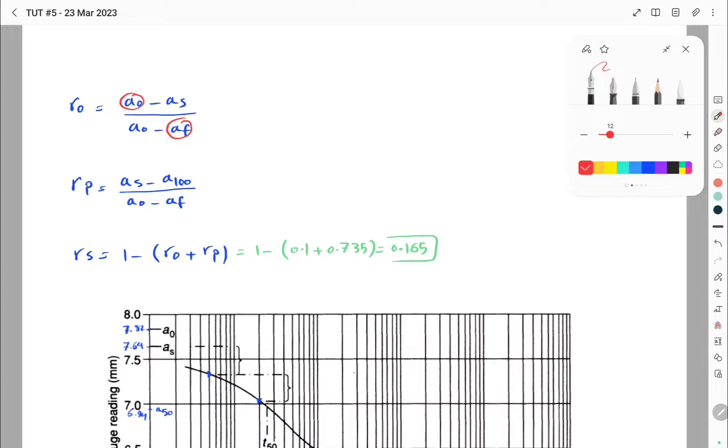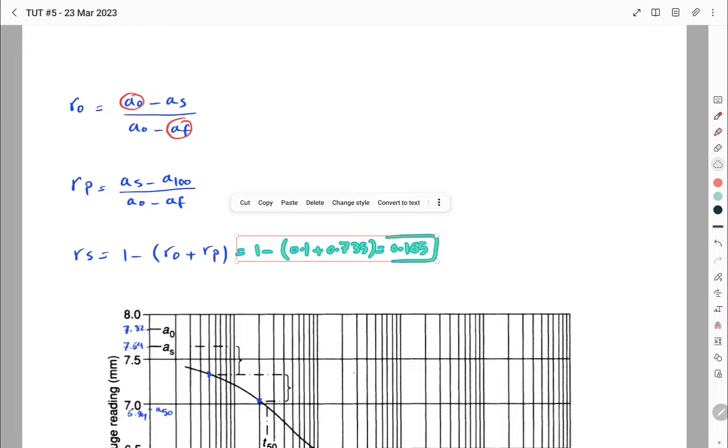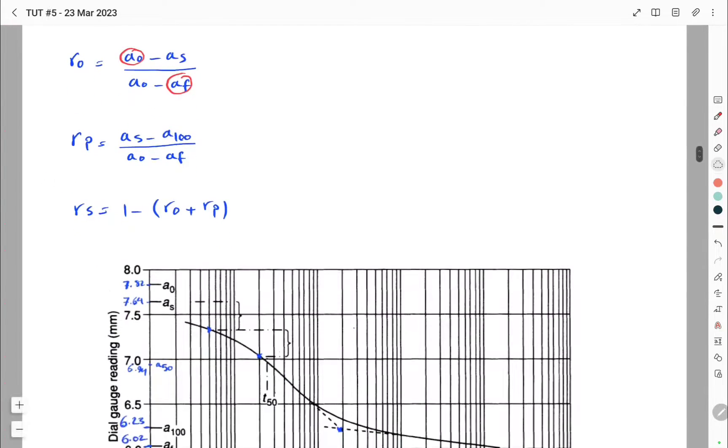So we have the value of a0, we have the value of AF. We have to determine the value of AS and a100 using the plot. The equation for RS is the same; we only need to substitute the values of R0 and RP that we determine using the log time plot.